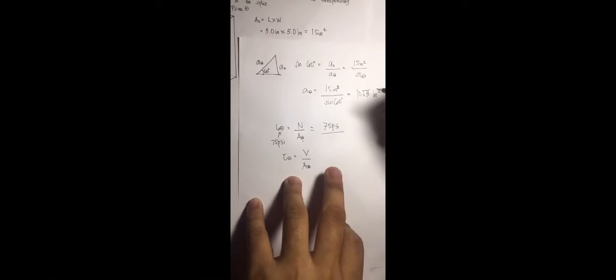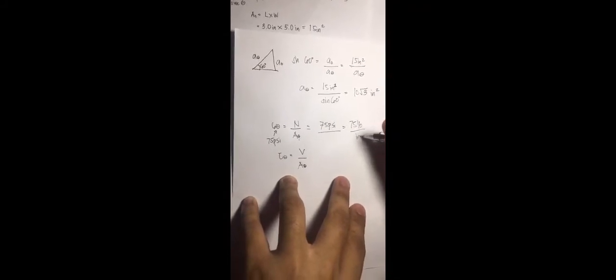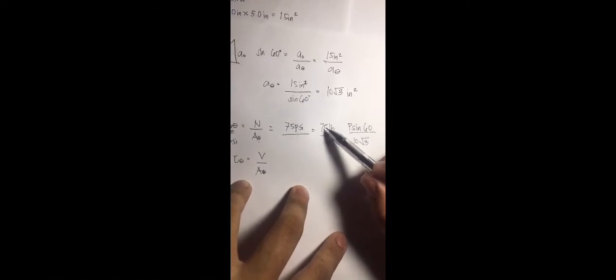So, we plug in 75 PSI. 75 PSI is equal to, or 75 pounds per square inch, is equal to P sine 60 degrees, all over 10 square root of 3 inches squared. So in this case, it's pounds per square inches, so 75 times 10 square root of 3, divided by sine of 60,